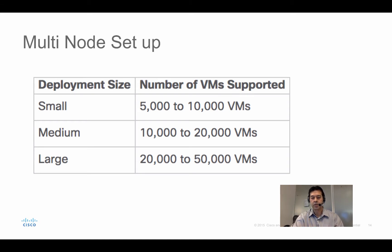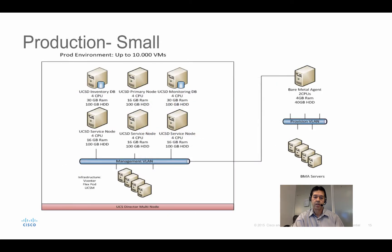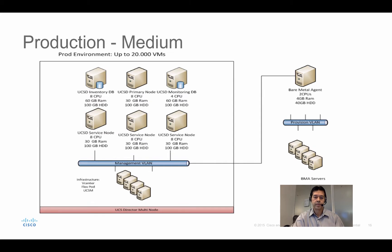Under the current CCO guidelines this is what it states, but I recommend you check the Cisco website for the version you're deploying to see the current limitations. For multi-node setup: small means 500 to 10,000 VMs, medium is 10,000 to 20,000, and large means 20,000 to 50,000 VMs. You can see the number of service nodes, primary nodes, and monitoring nodes — for example, two to three service nodes for small, scaling up from there.